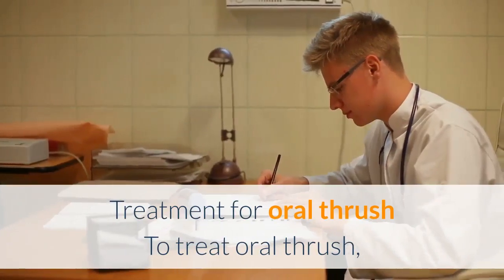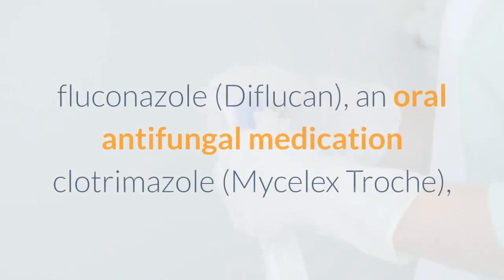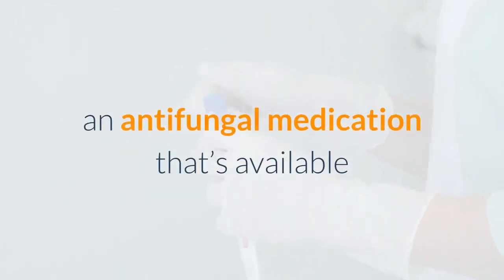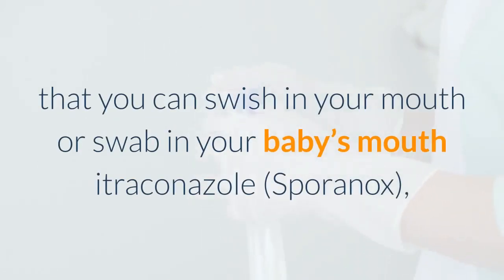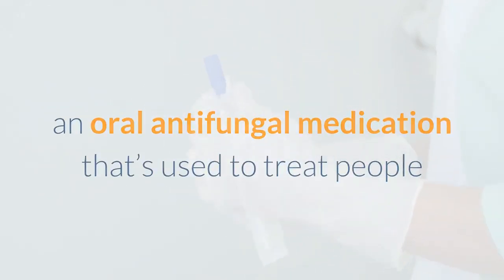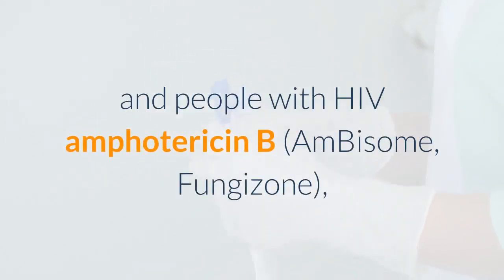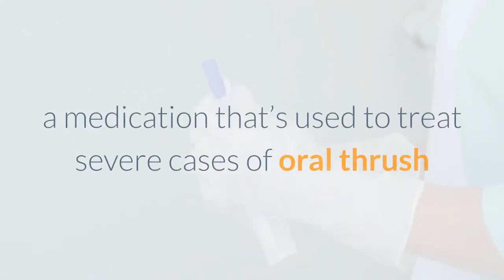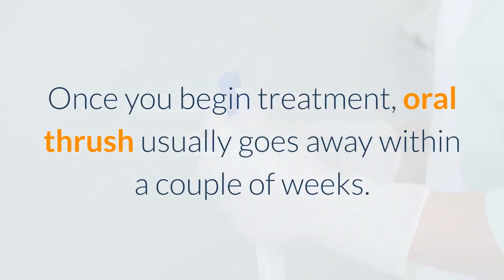To treat oral thrush, your doctor may prescribe one or more of the following medications: fluconazole (Diflucan), an oral antifungal medication; clotrimazole (Mycelex Troche), an antifungal medication available as a lozenge; nystatin (Nystop, Nyata), an antifungal mouthwash that you can swish in your mouth or swab in your baby's mouth; itraconazole (Sporanox), an oral antifungal used for people who don't respond to other treatments or people with HIV; and amphotericin B (Fungizone), used to treat severe cases of oral thrush.